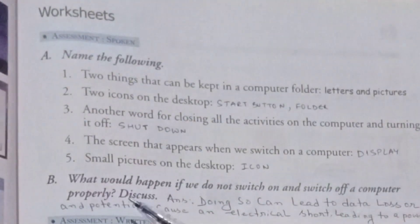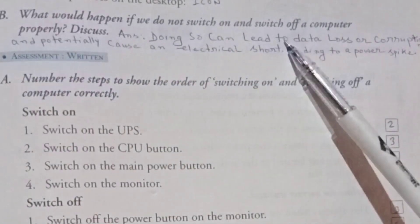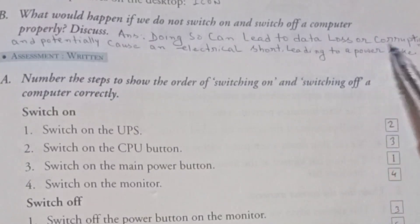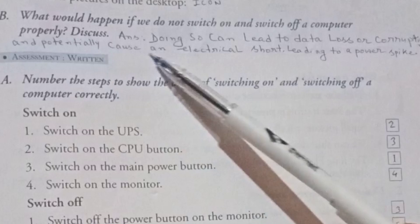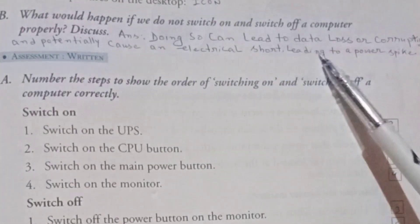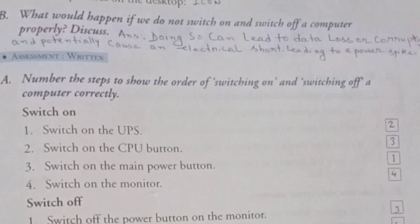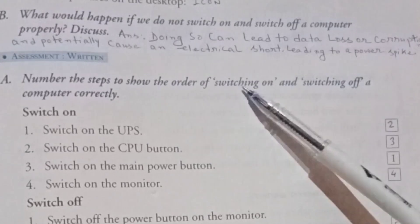B. What would happen if you do not switch on or switch off a computer properly? Discuss. Answer: Doing so can lead to data loss or corruption and potentially cause an electrical short leading to a power spike. Number the steps to show the order of switching on and switching off a computer correctly.